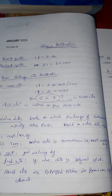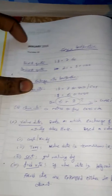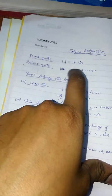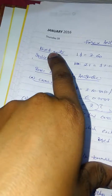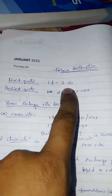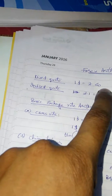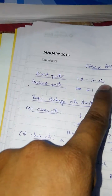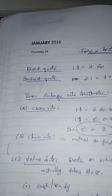First thing in Forex arithmetic is quoting. We have two types of quotes: one is direct quote and the other is indirect quote. Direct quote is one unit of foreign currency expressed in terms of home currency — for example, one dollar equals rupee 60. Whereas one unit of home currency expressed in terms of foreign currency is indirect quote. So one dollar equals rupee 60 is a direct quote in India, where home currency is rupee. The same expression — one dollar equals rupee 60 — will be an indirect quote in the US.